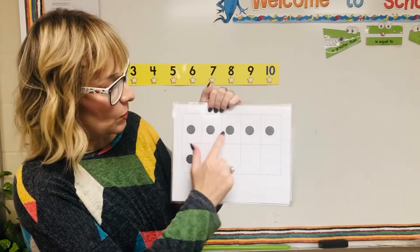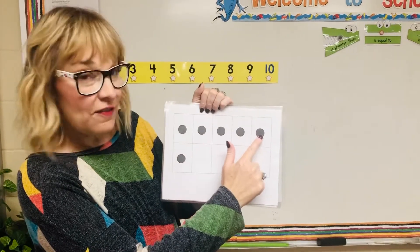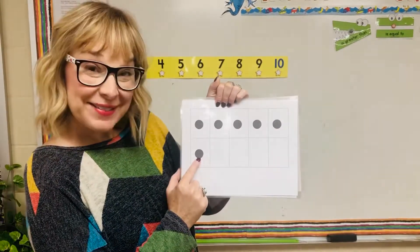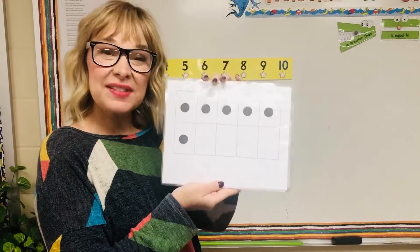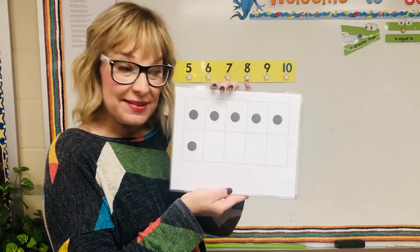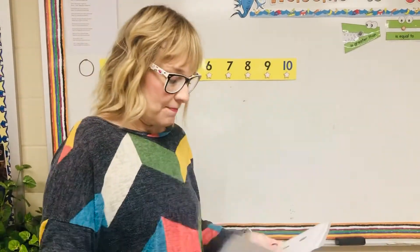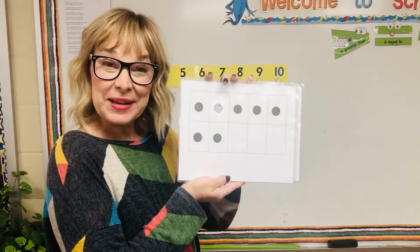1, 2, 3, 4, 5, 6. This is what a number 6 represents. Let's go to the next one.